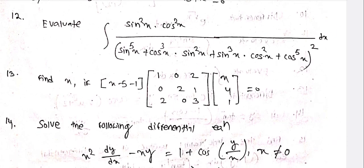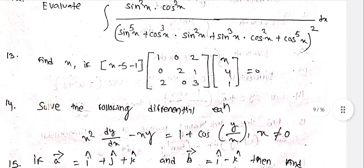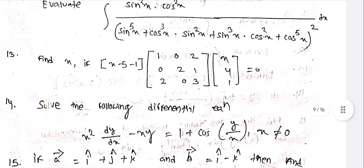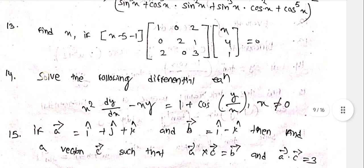(sin²x · cos²x) / [(sin⁵x + cos³x · sin²x + sin³x · cos²x · cos⁵x)²] dx.